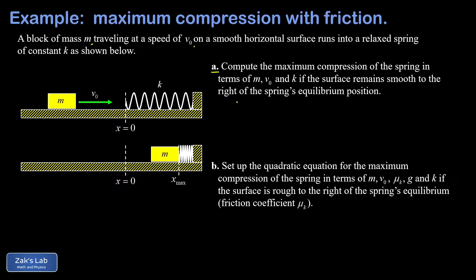So we can say the initial kinetic energy, that's one half m v0 squared, is equal to the final spring potential energy. And that's one half k x max squared. And that x max is what we're trying to solve for. The factors of one half are going to cancel out. I divide both sides by k and square root the result.